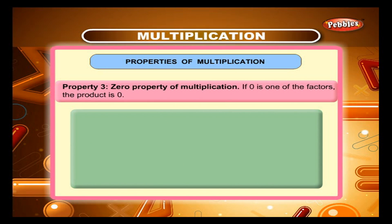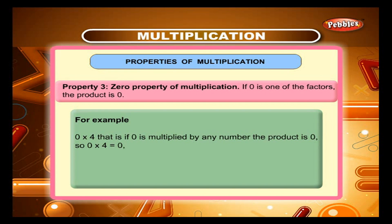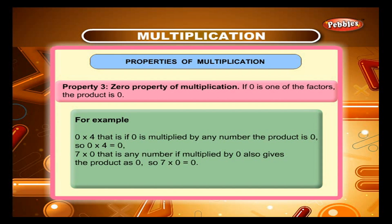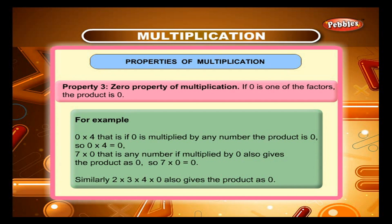Property 3: Zero property of multiplication. If 0 is one of the factors, the product is 0. For example, 0 into 4: if 0 is multiplied by any number, the product is 0, so 0 into 4 is equal to 0. Also, 7 into 0: any number multiplied by 0 also gives the product as 0, so 7 into 0 is equal to 0. Similarly, 2 into 3 into 4 into 0 also gives the product as 0.